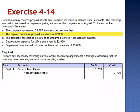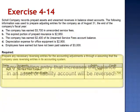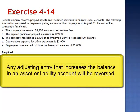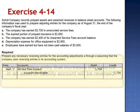Letter B: the expired portion of prepaid insurance is $2,950. The August 31st adjusting entry is a debit to insurance expense and a credit to prepaid insurance. This adjustment reduces the value of an asset. It will not be reversed.